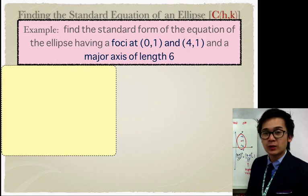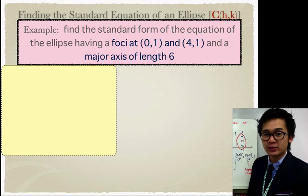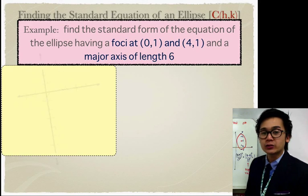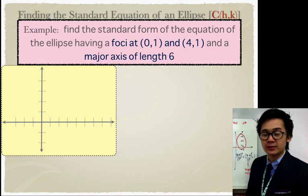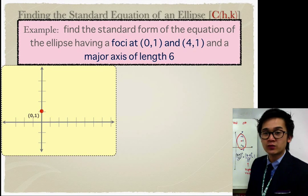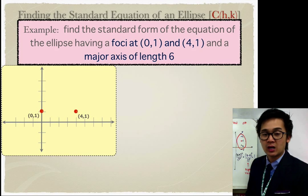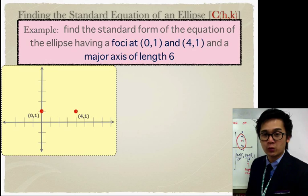In this ellipse we have the foci at (0, 1) and (4, 1), with a major axis of length 6. To find the standard equation we first graph the given parts. We have the first focus at (0, 1) and the second at (4, 1). We can find the center of this ellipse by finding the midpoint of the two foci, which is at (2, 1).